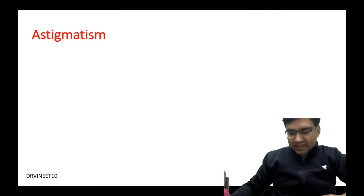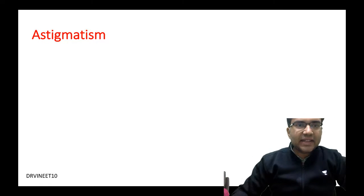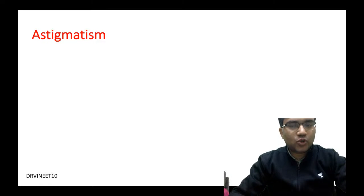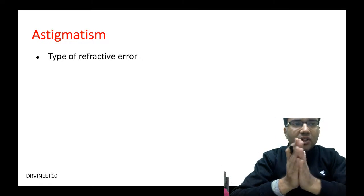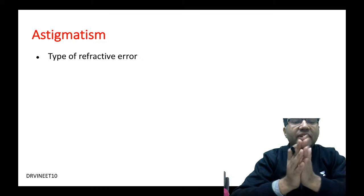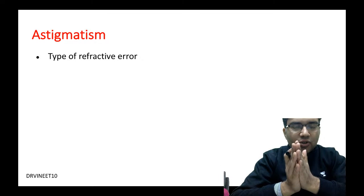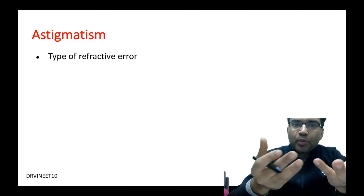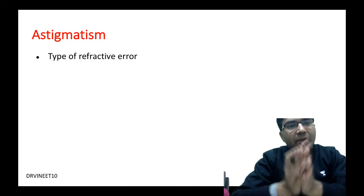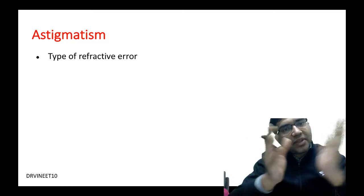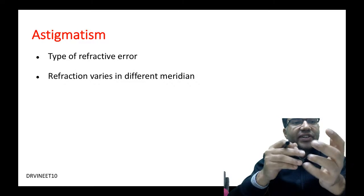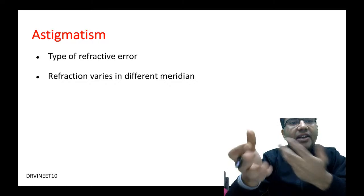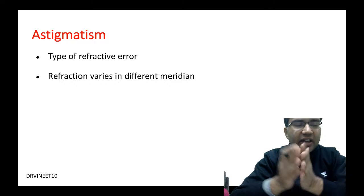Today's topic is astigmatism. Astigmatism is a type of refractive error, like myopia or hypermetropia. Astigmatism is also a refractive error, but the difference is that the refraction varies in different meridians.